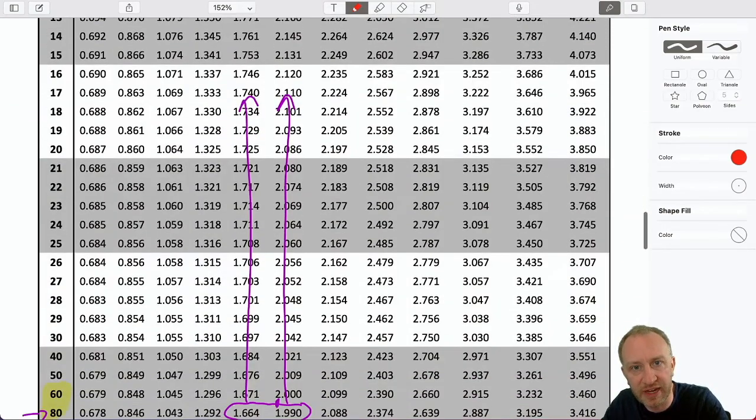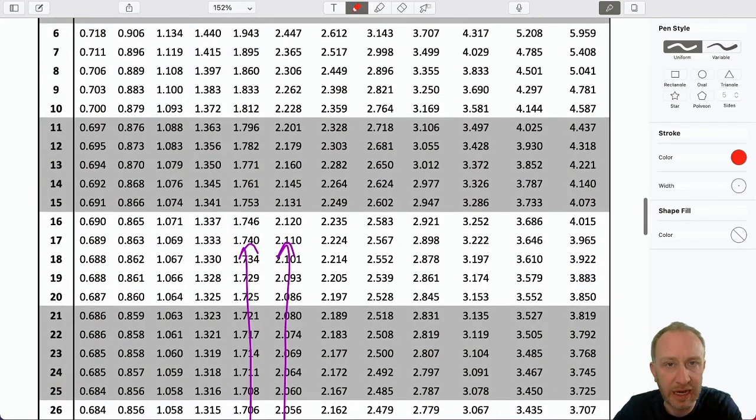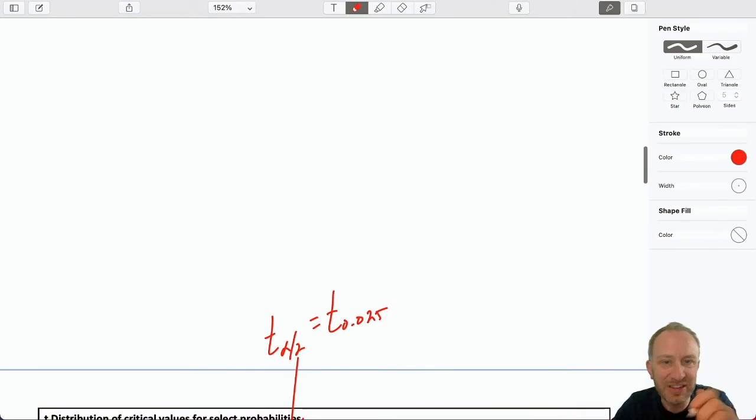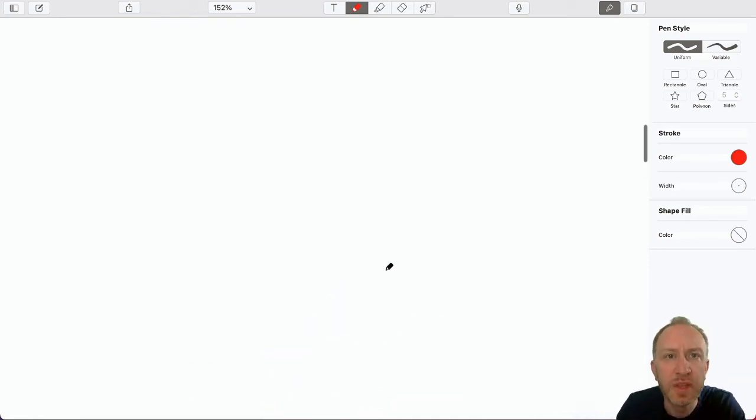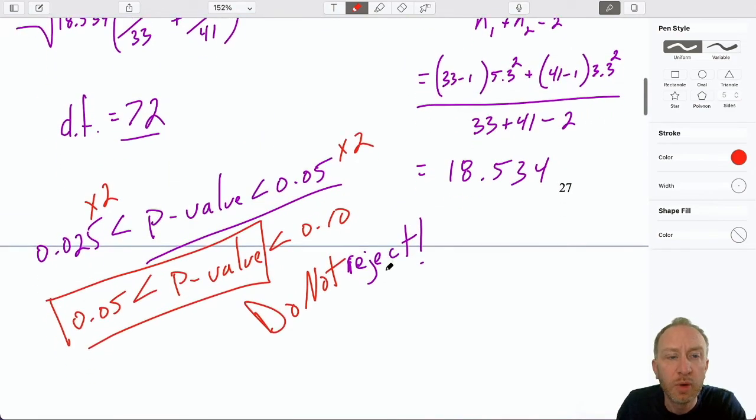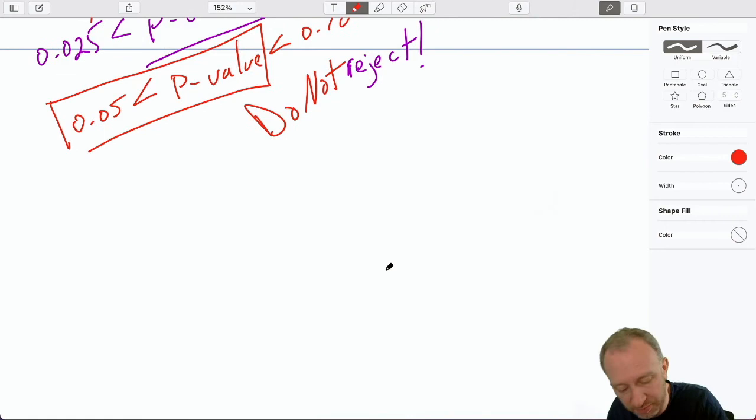There I find my critical value is that 1.99. And again, that's 80 degrees of freedom because we don't have 72, so I'm using 80 as an approximation. So both of those, the p-value approach and the critical value approach both bring us to the same conclusion.